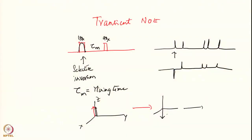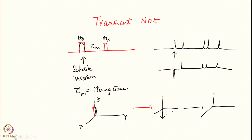As the inverted spin recovers to equilibrium, it will relay this perturbed magnetization to other spins which are close by in space. So the other spin components present will also receive a small contribution of that magnetization. The black spin is slowly recovering while simultaneously transferring a portion of its magnetization to nearby red spins.